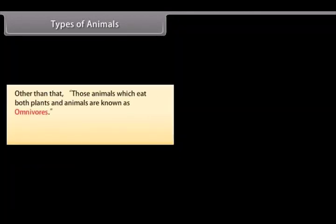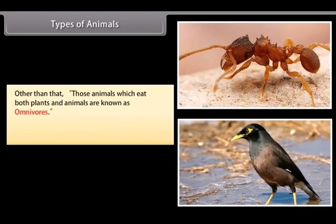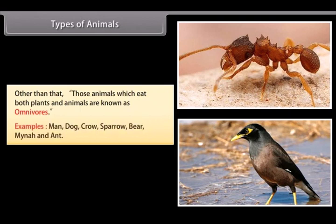Those animals which eat both plants and animals are known as omnivorous. Examples include man, dog, crow, sparrow, bear, myna and ant.